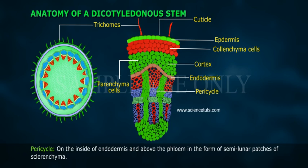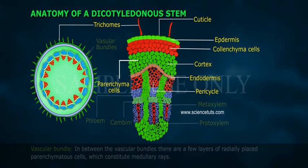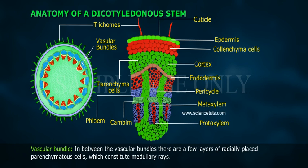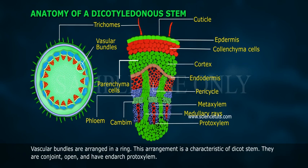The cells of the endodermis are rich in starch grains and the layer is also referred to as a starch sheath. Pericycle is on the inside of the endodermis, present above the phloem in the form of semi-lunar patches of sclerenchyma. In between the vascular bundles there are a few layers of radially placed parenchyma cells which constitute medullary rays.